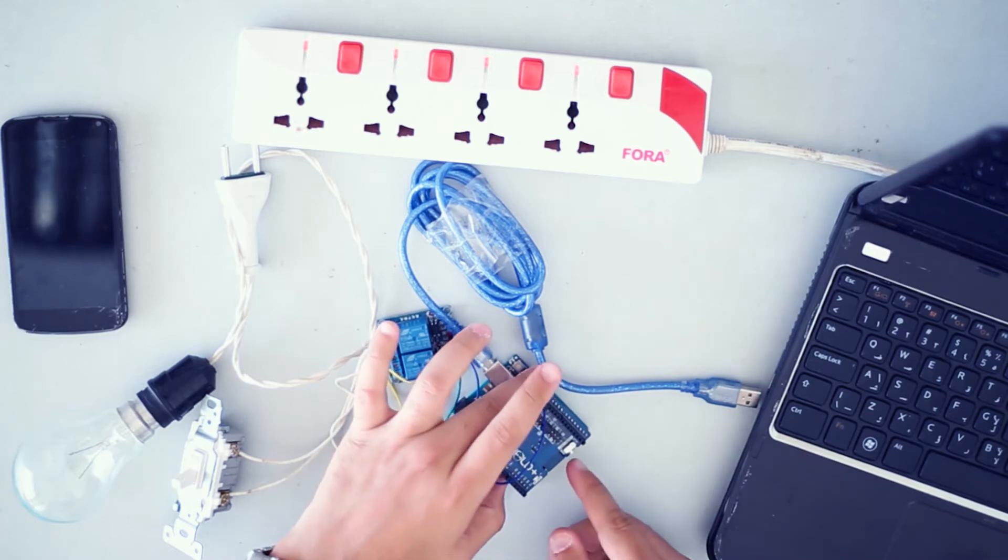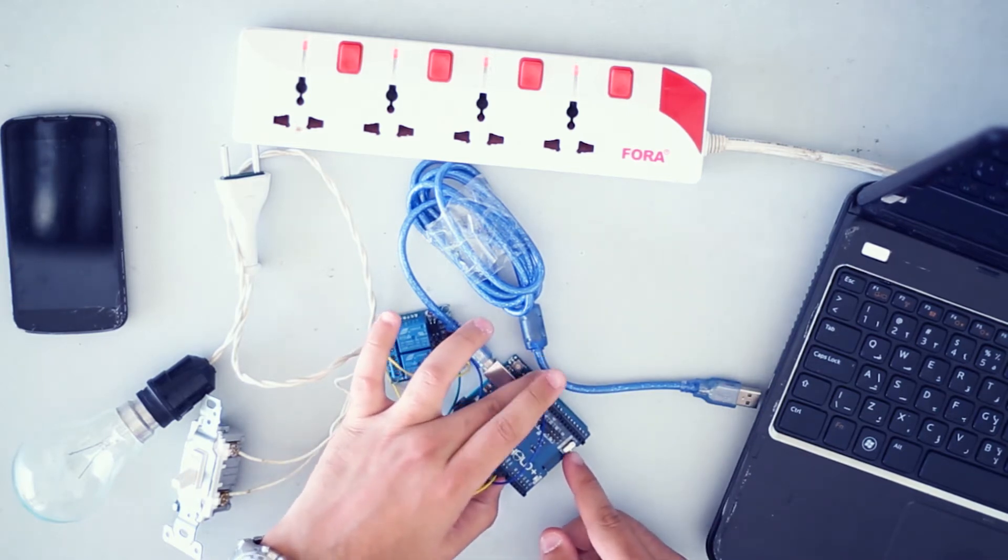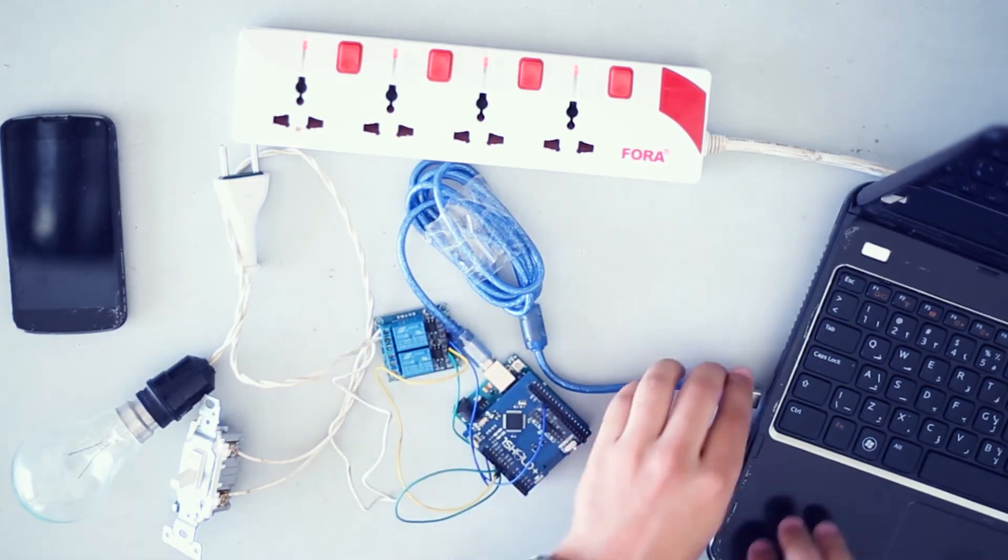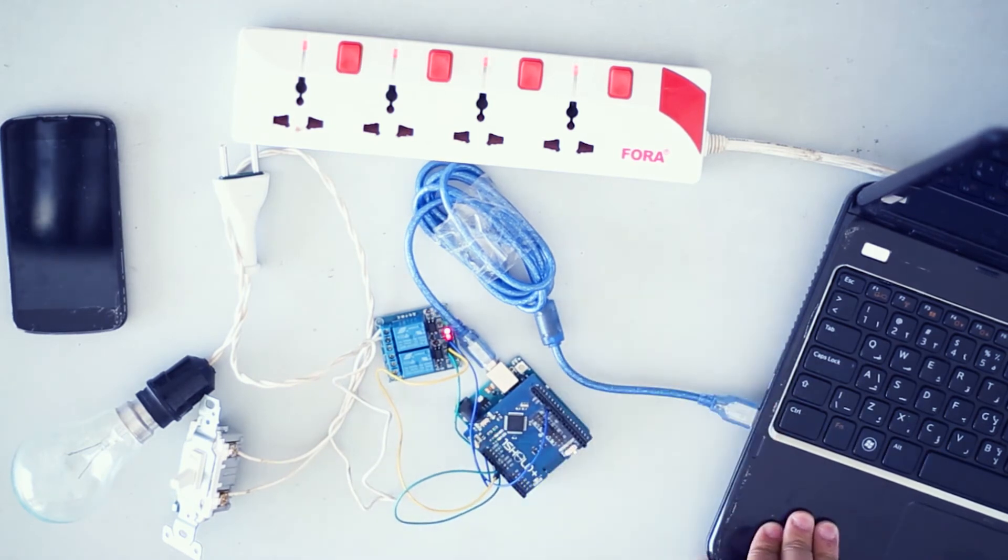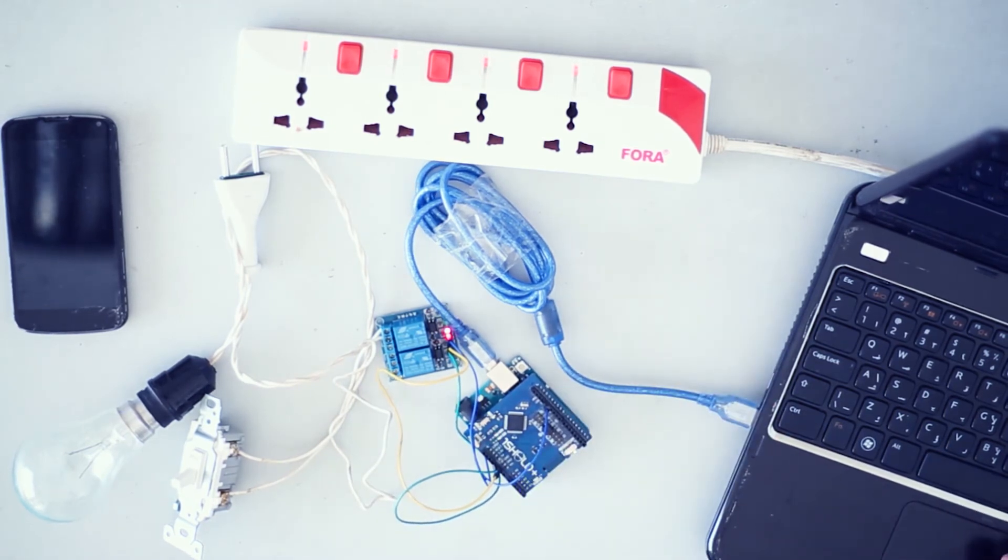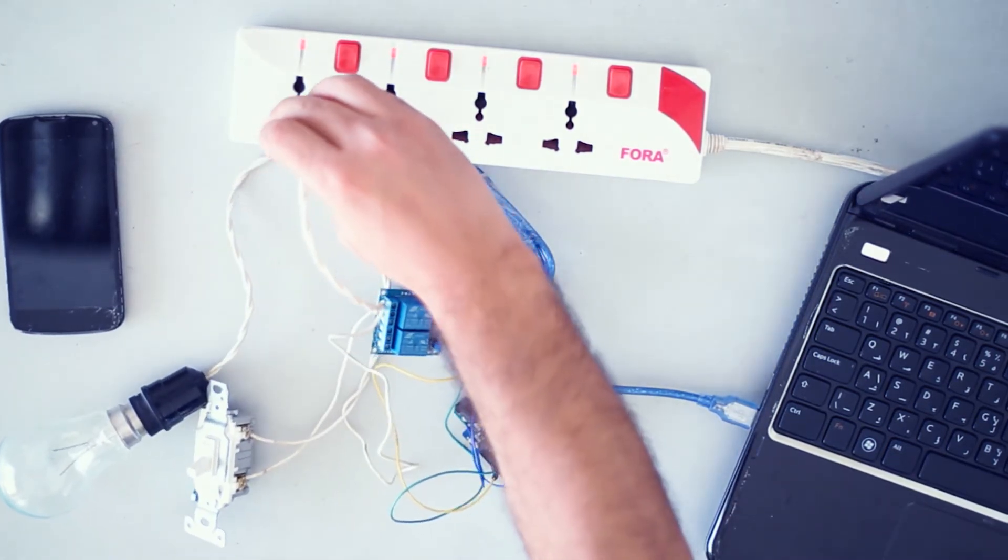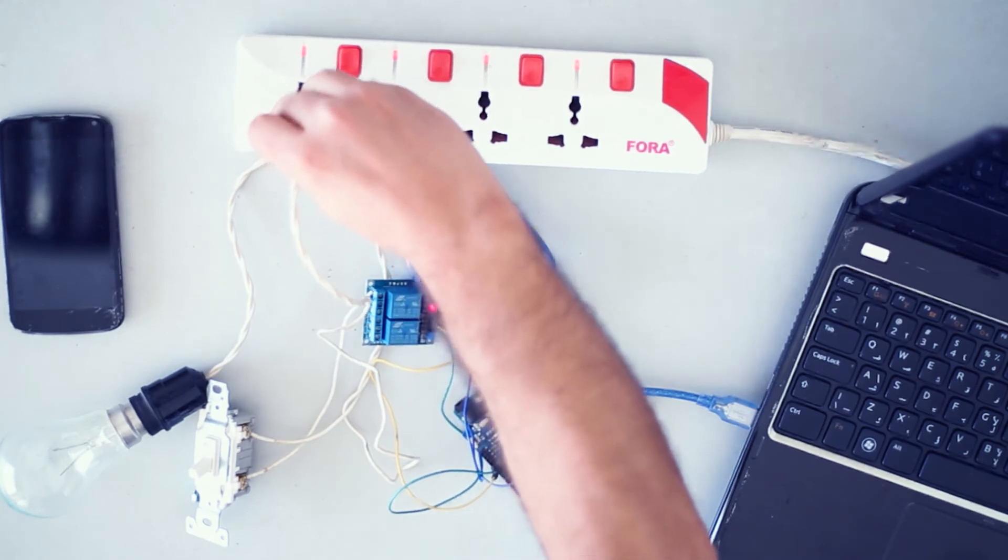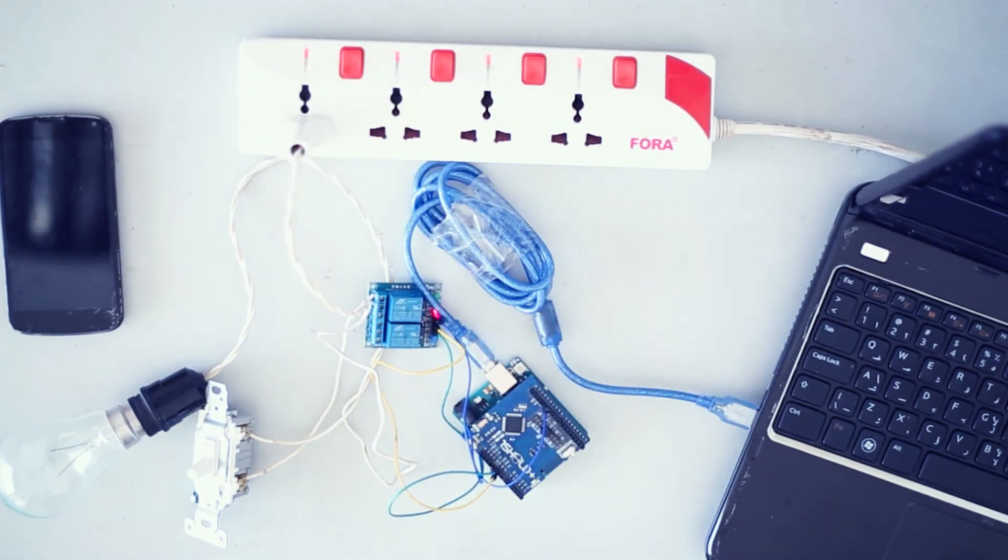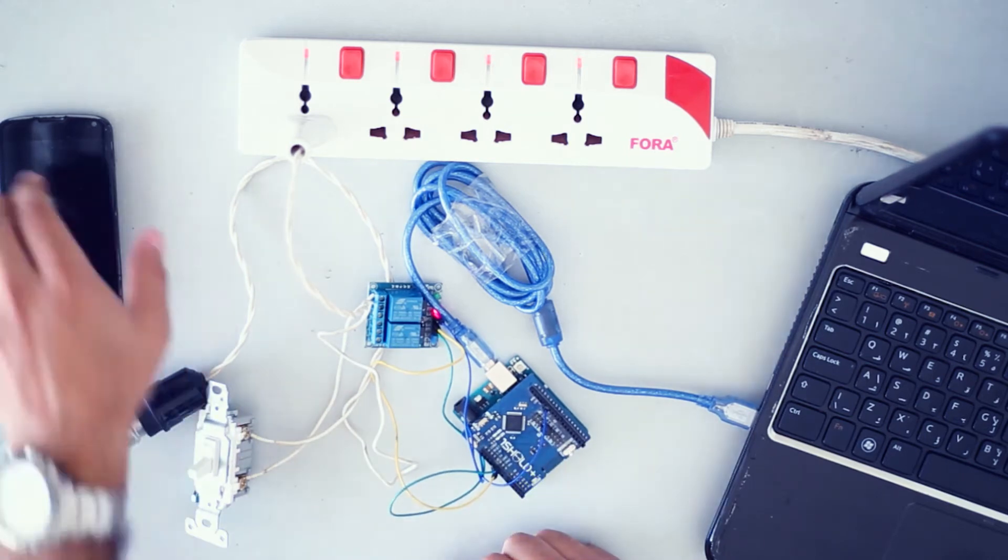Now we're gonna upload the code, but before that, switch the OneShield board to uploading mode. Plug the Arduino to the laptop and upload the sketch. Okay, plug the light bulb to the power grid. Don't forget to switch back the OneShield to communication mode.